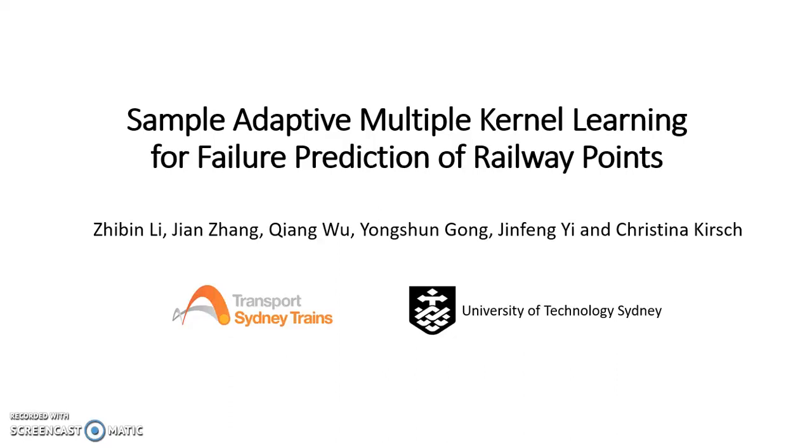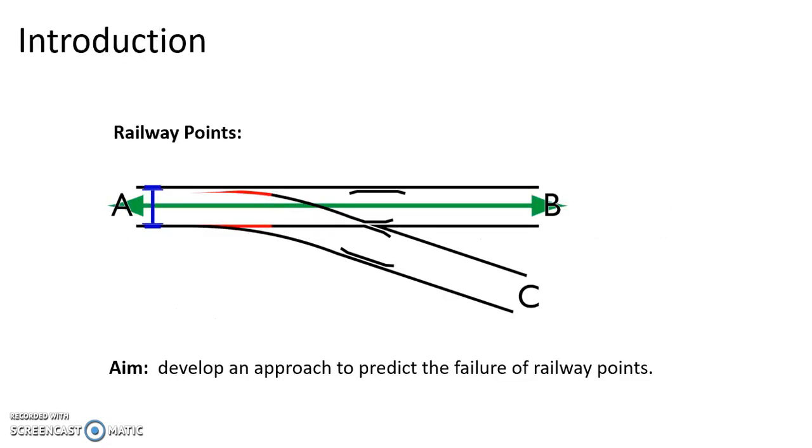This is a short presentation about our paper Sample Adaptive Multiple Kernel Learning for Failure Prediction of Railway Points. Railway points are mechanical installations allowing railway trains to be guided from one track to another. They are among the key components of railway infrastructure.